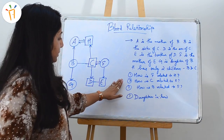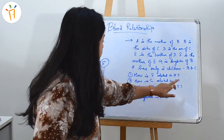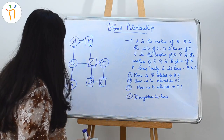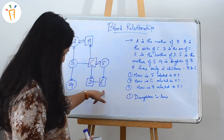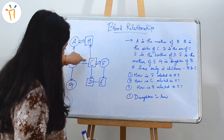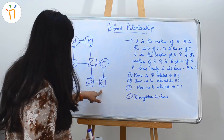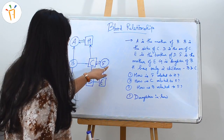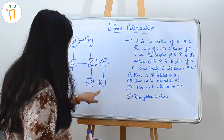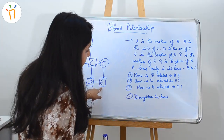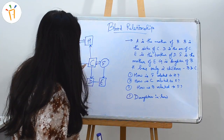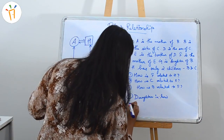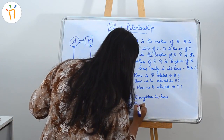Moving on to the next question: how is C related to E? Where is C? C is here. And where is E? E is here. If we start from C and move to E, we see C is the husband, F is the wife, and E is the son. So obviously, C will be the father of E. The second answer is father.